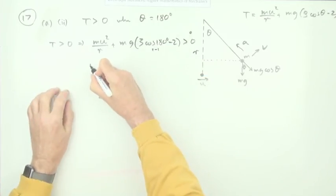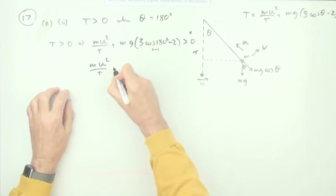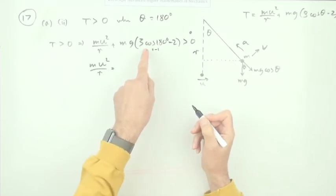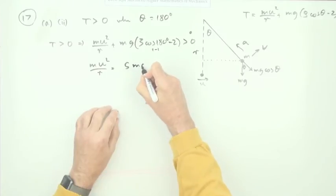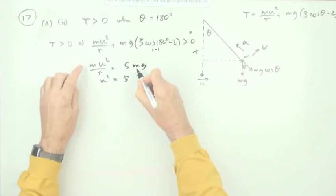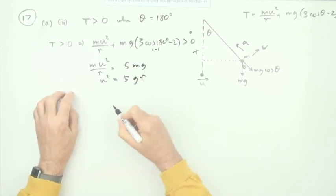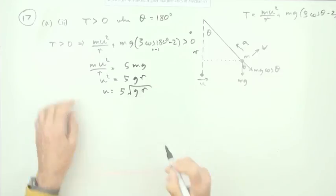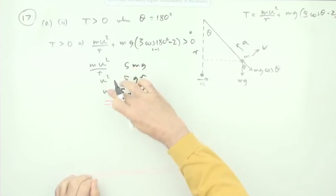If you take that over, the m's would then cancel, so mu squared upon r would equal 5mg. So u squared is going to be 5gr, so u is going to be root 5gr. It has to be more than that to be able to get round the top.